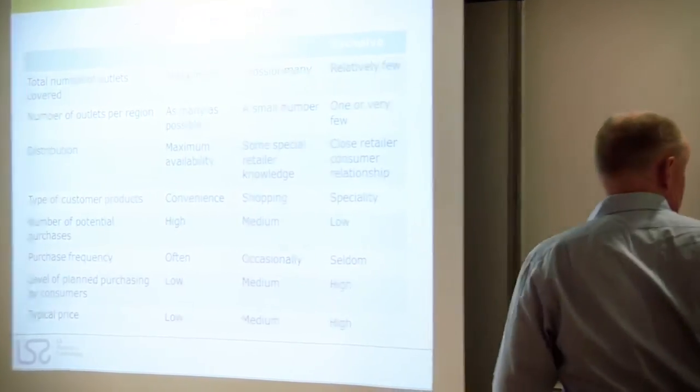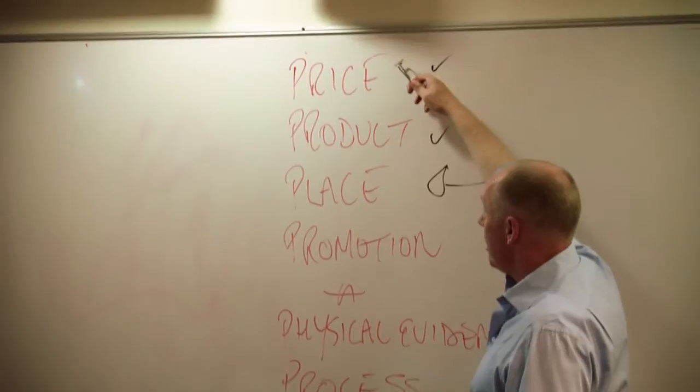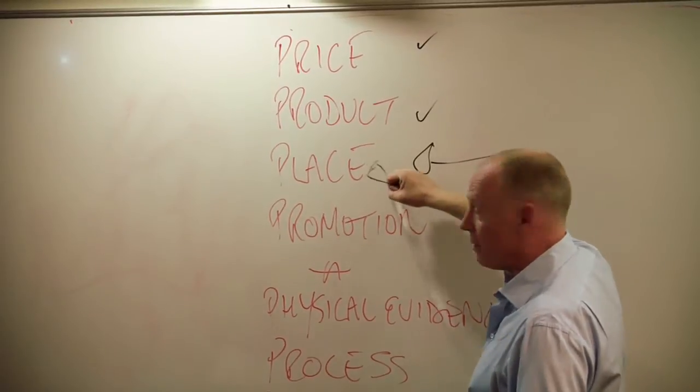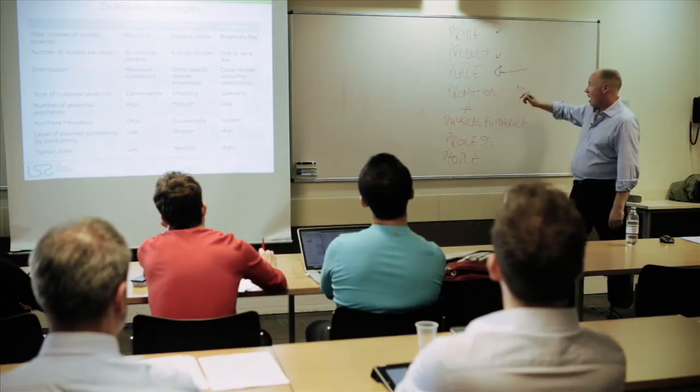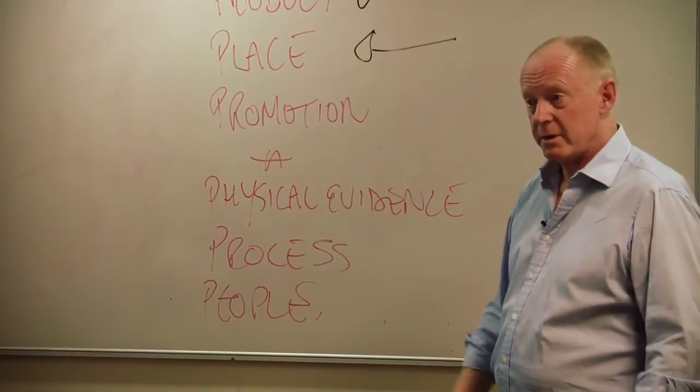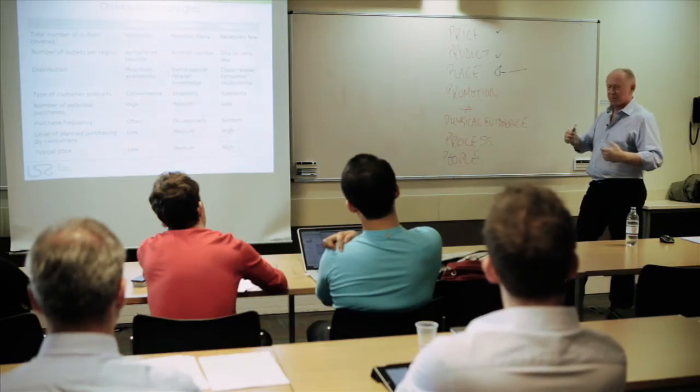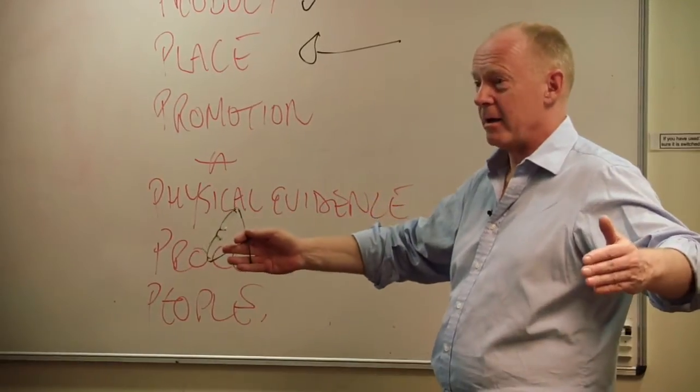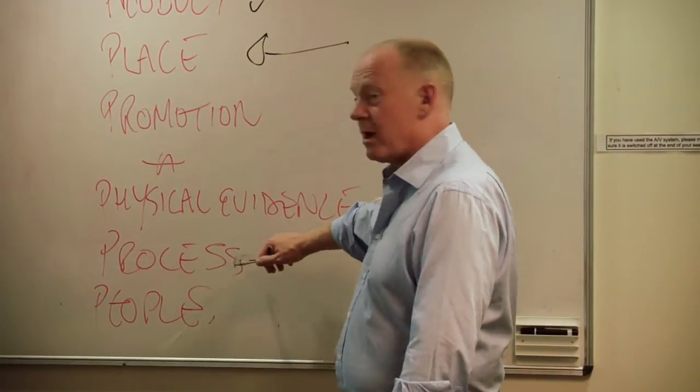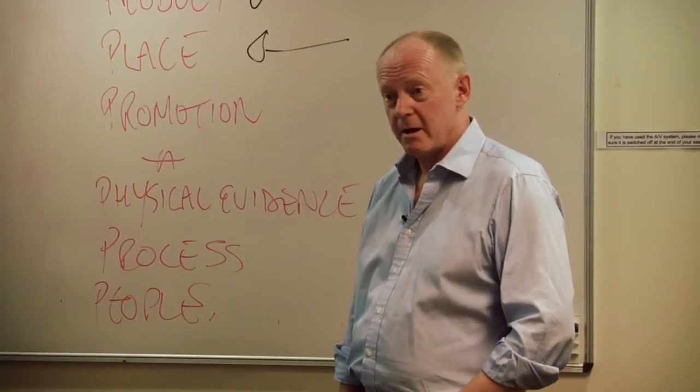The closer you are to an exclusive distribution strategy, typically the higher your price, the more sought after your product, the fewer your points of distribution. The more targeted your promotion, the higher the level of training that you're giving to the people who are selling your product, the classier, if you like, probably not the right word, but you know, the classier the environment in which you're selling it. And also, the process through which the product is sold and delivered will be different. That will be slicker and more luxurious. It certainly is with Apple, just on laptops. It's a very slick process.